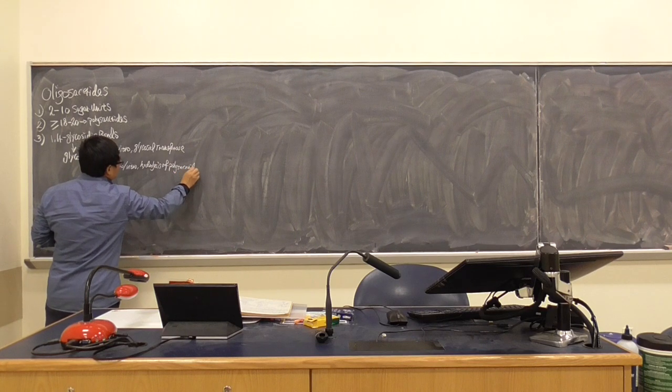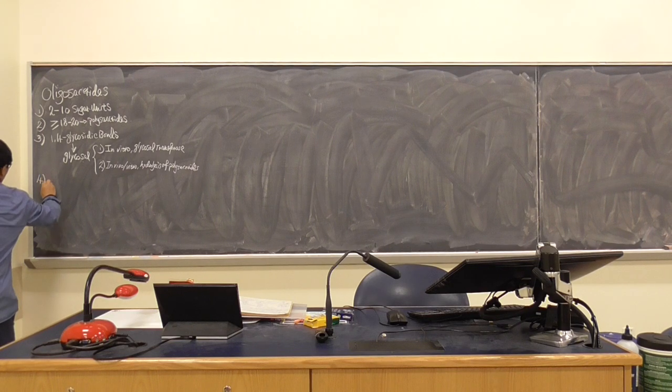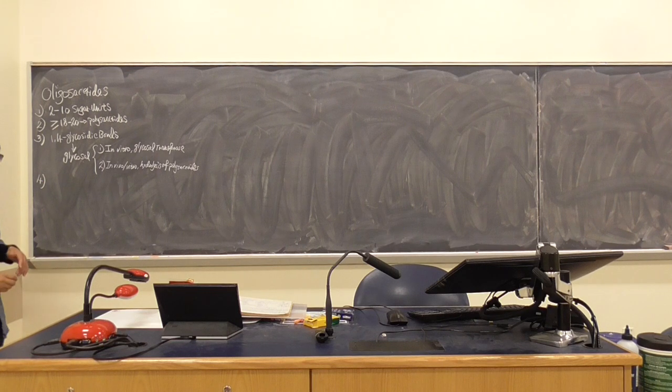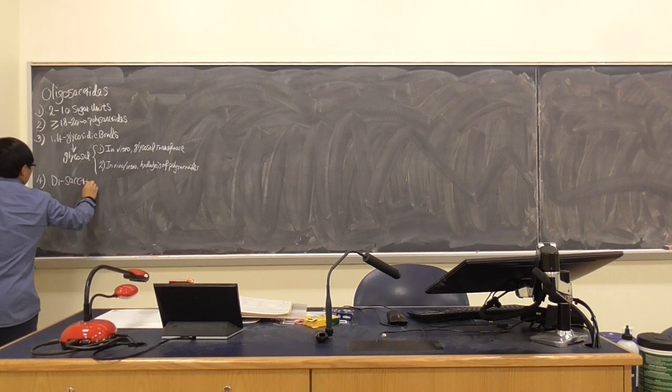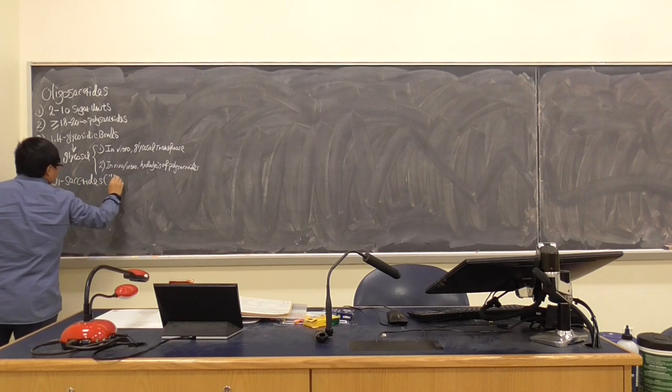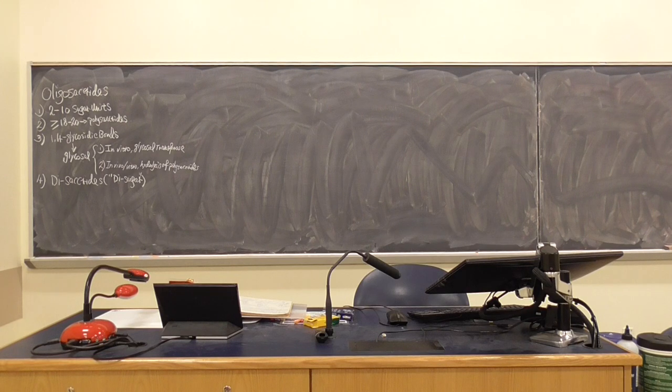The glycosol have two different ways to generate. Number one, if it's in vitro, that will be happened in the intestinal area, usually rely on glycosyl transferase. But more often, in the food manufacturing process, there will be hydrolysis of polysaccharides.